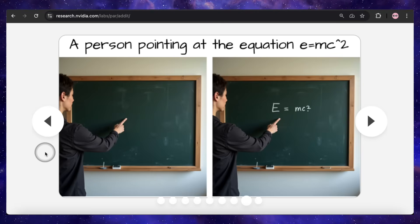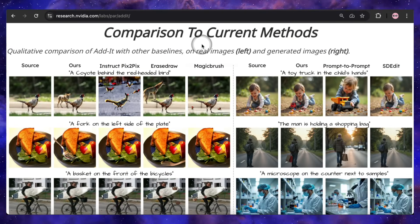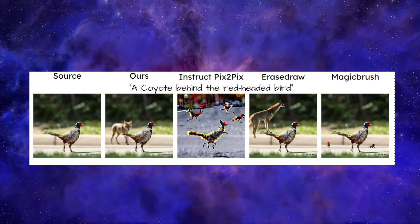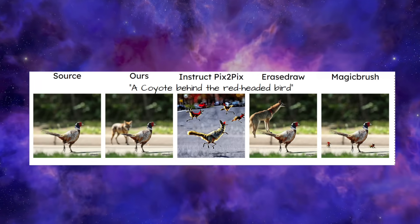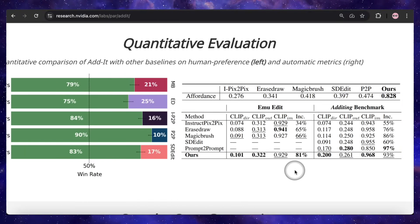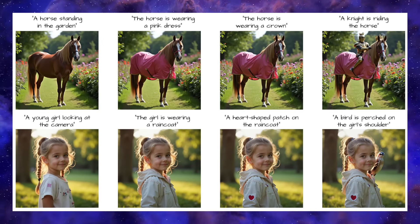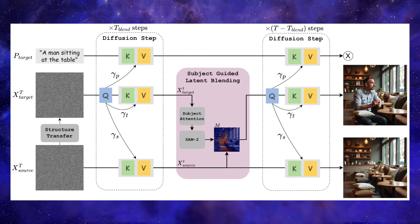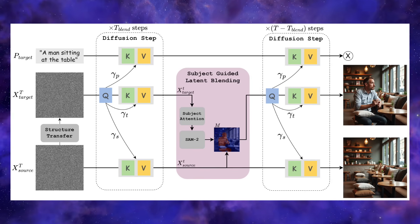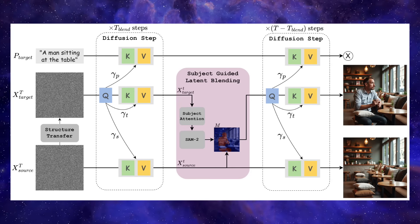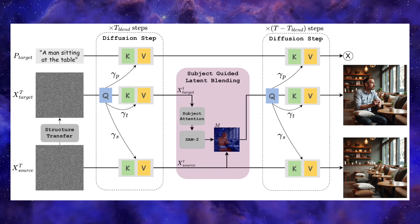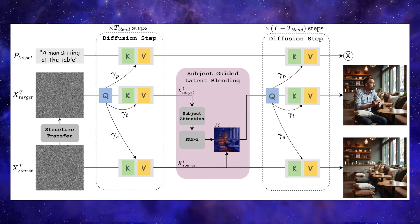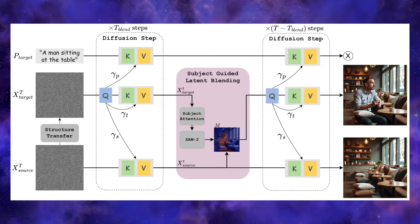When you put Addit side by side with other models, the difference is stark. In a test to add a coyote behind the red-headed bird, Addit generates a perfectly blurred coyote in the background, while other models create bizarre artifacts or fail completely. The human preference scores in the paper back this up, with users overwhelmingly choosing Addit's results. So how does it pull off these incredible edits without any extra training? The magic happens inside the diffusion model's attention mechanism. The researchers designed Addit to intelligently balance information from three key sources at once: the original source image, your text prompt for the instruction, and the new image it's currently generating.